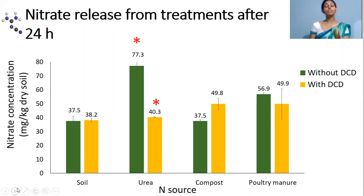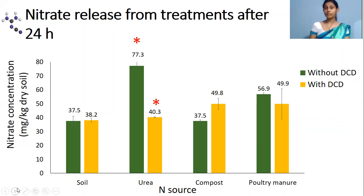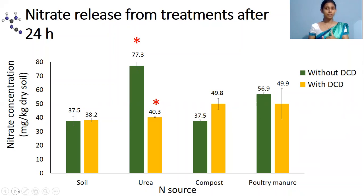The reason for this observation is the increased organic matter contents due to compost and poultry manure application. By increased organic matter contents, DCD availability is reduced and, due to that, DCD efficiency is also reduced.